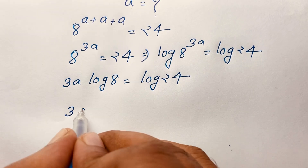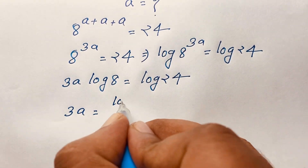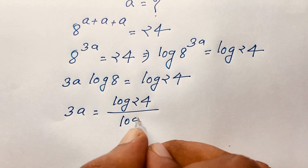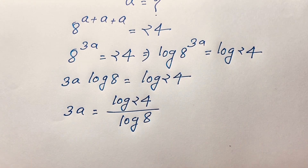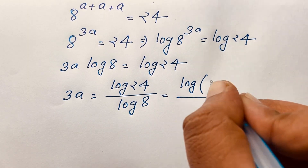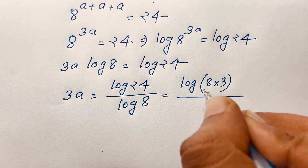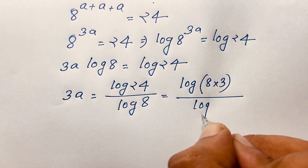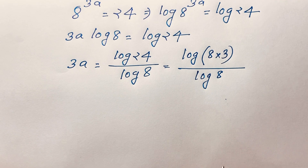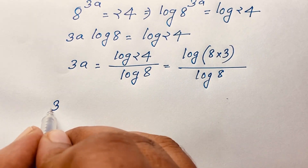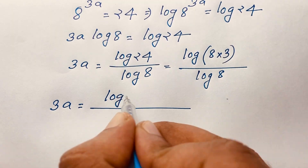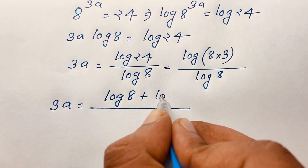So here is 3A is equal to log 24 divided by log 8. Now, 24 can be written as 8 times 3, so it will be log of 8 times 3 over log 8. Since 8 times 3 equals 24, if I evaluate this expression, it will be 3A is equal to log 8 plus log 3.